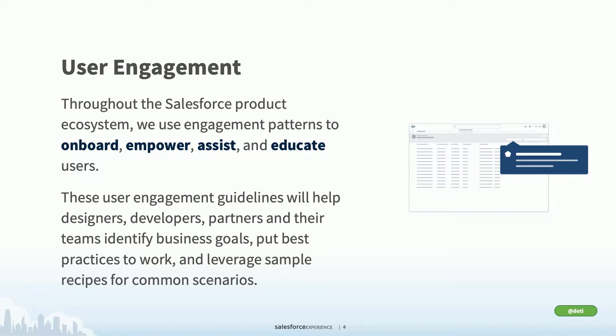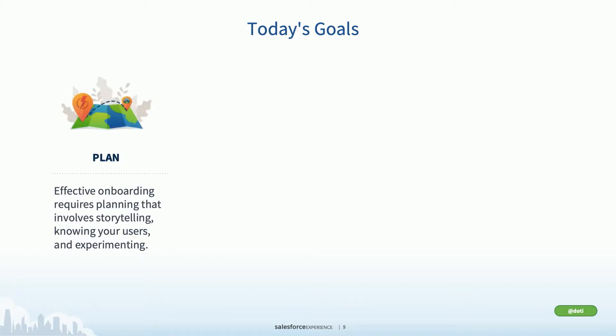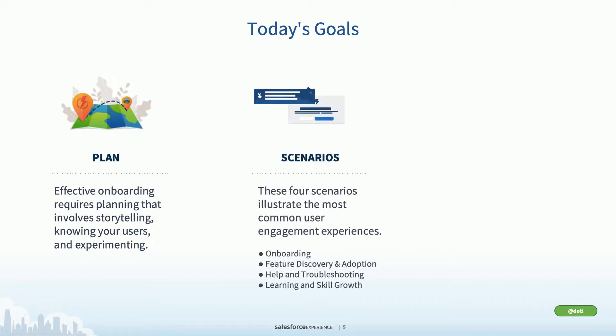We've wrapped up some common onboarding scenarios into what we call recipes. Today I'm going to cover three main areas: planning — the most important first step. Effective onboarding requires planning that involves storytelling, knowing your users, and experimenting.